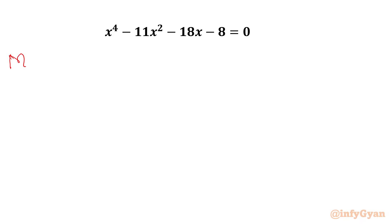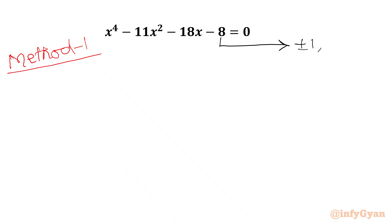So let me write here Method Number 1. In this method, I will use the rational root theorem and synthetic division method. I need to know the eligible factors of the constant, so I can write here ±1, ±2, ±4, and ±8. For the leading coefficient, I can write ±1. Now we have to consider the ratio of constant to leading coefficient.